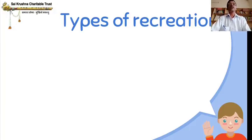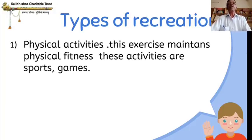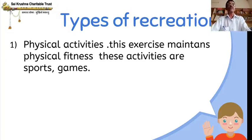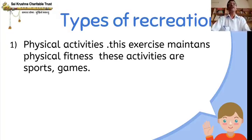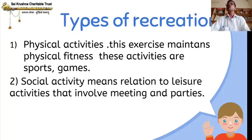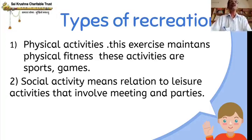Types of Recreation. There are four types of Recreation. Number one is Physical Activities — this maintains physical fitness. These activities are Sports and Games. Next, Social Activities — Social Activities means relating to leisure activities that involve meeting and parties.